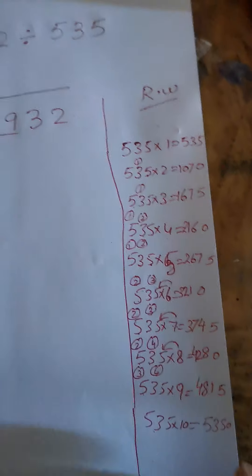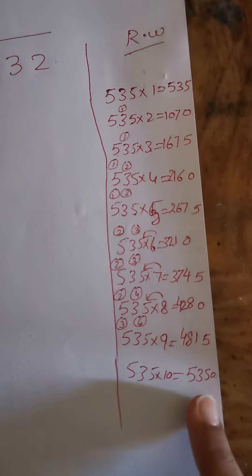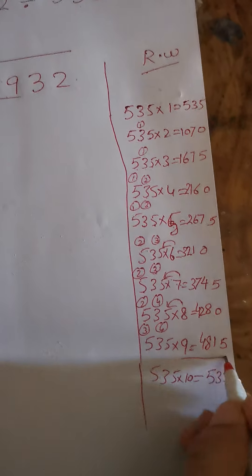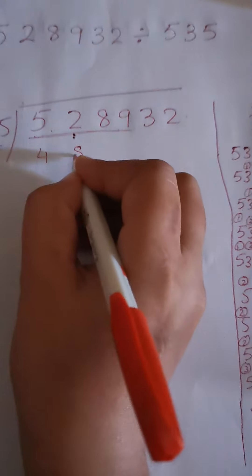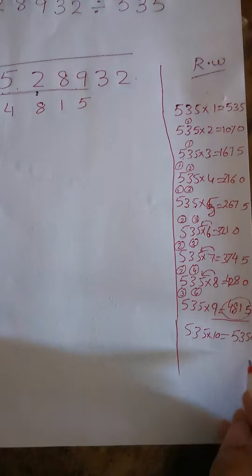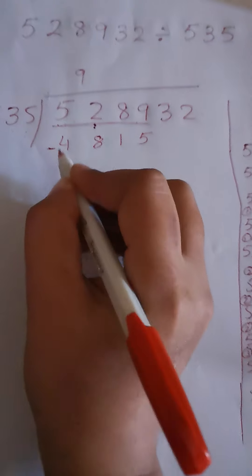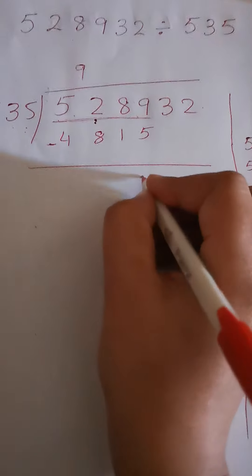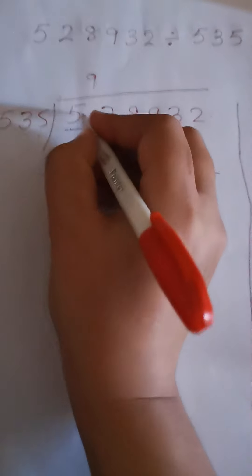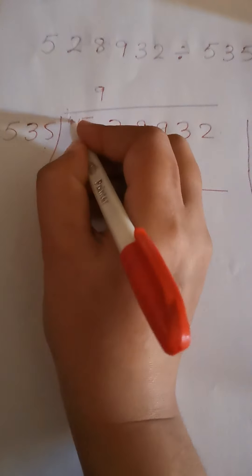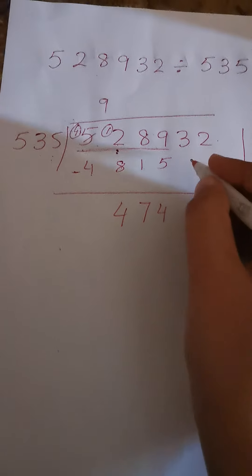We have 5289 and 5350. Since 5350 is bigger, we choose the lesser number, 4815, which is 535 times 9. We write 9 on top. Then we subtract: 9 minus 5 is 4, 8 minus 1 is 7. For the next digit, 2 is smaller than 8, so we take a carry. It becomes 12, and 12 minus 8 is 4. Then 4 minus 4 is 0.